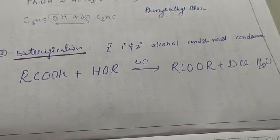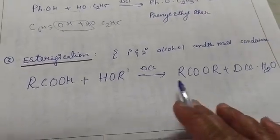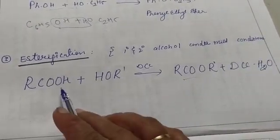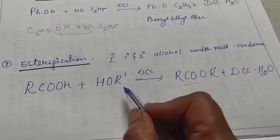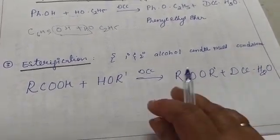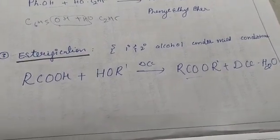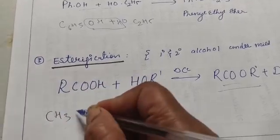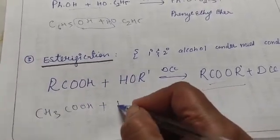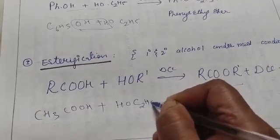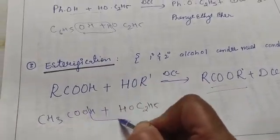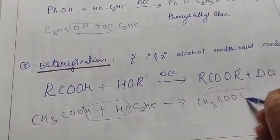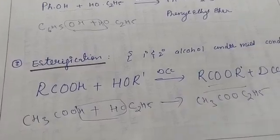The third application is esterification — the formation of esters. The functional group of an ester is R-CO-O-R. Take any acid and one alcohol and treat them in the presence of DCC. For example, CH3COOH plus C2H5OH: remove the water molecule, and ethyl acetate (CH3-CO-O-C2H5) is formed.